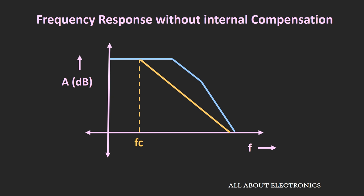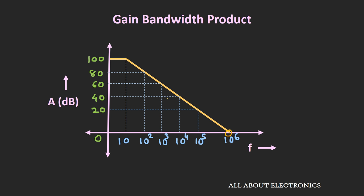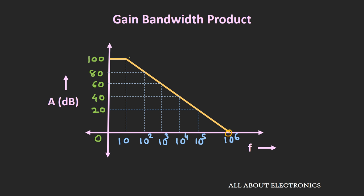That is the reason all op-amps are internally compensated, and because of that the open-loop bandwidth of the op-amp is very low. Because of this internal compensation, it is easy to predict the gain of the op-amp if we know the frequency of operation, or if we know the gain, it is easy to identify the frequency of operation. This is particularly true when we are operating the op-amp in the region where the product of gain and frequency is constant — and that is known as the gain bandwidth product of the op-amp.